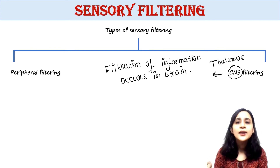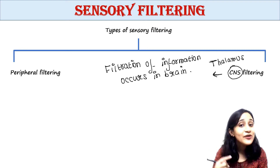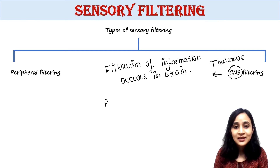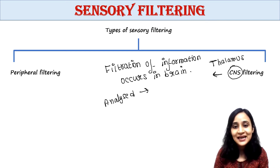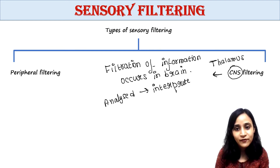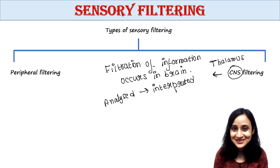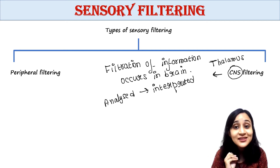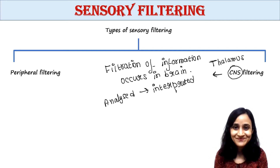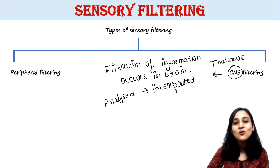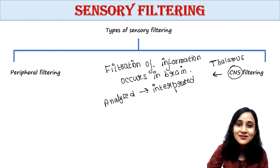When any information reaches our brain, it is first analyzed, then interpreted. If found useless, it gets rejected without perception. Let's look at some examples.